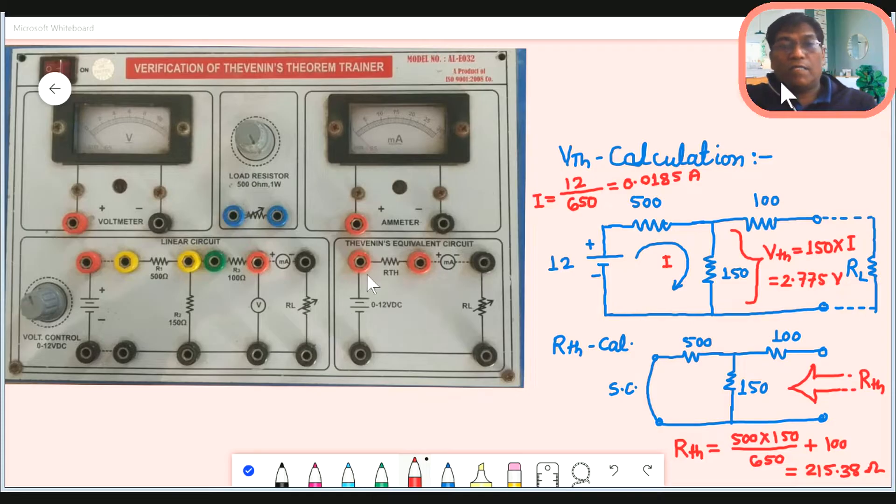In Thevenin's theorem, we can convert any network into a very simple network. Here is an example network: there is a 500 ohm resistance, here is a 100 ohm resistance, here is a 500 ohm resistance. This is a 12 volt source. This network can be converted into a simple network with one voltage source and one resistance.